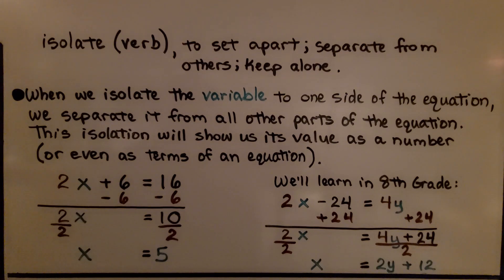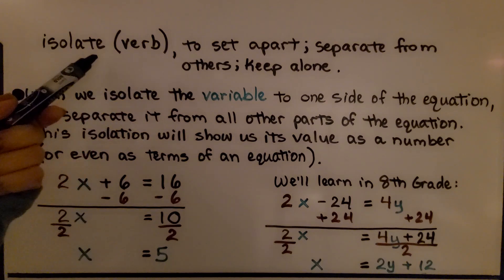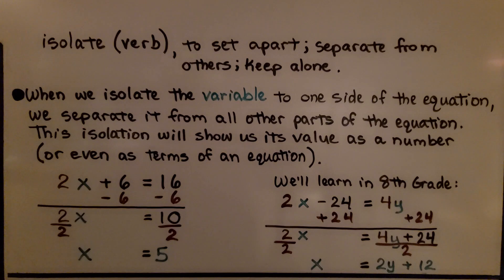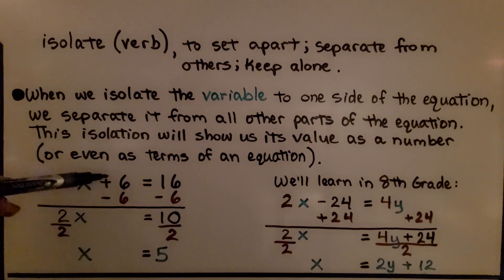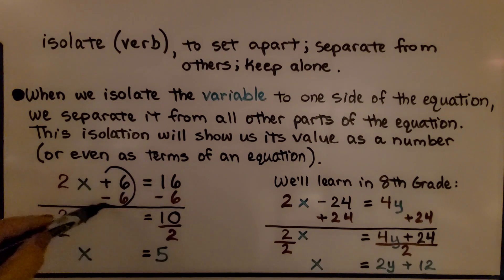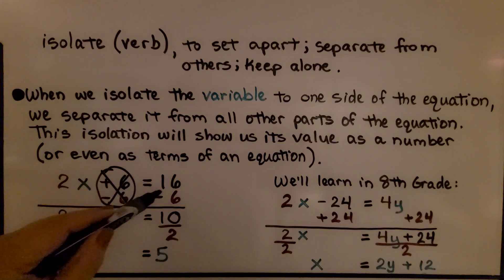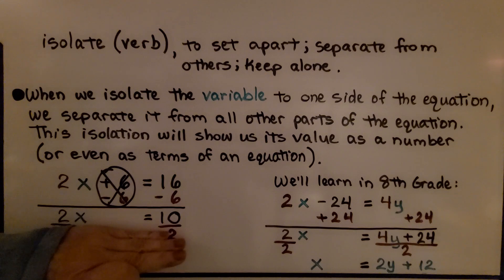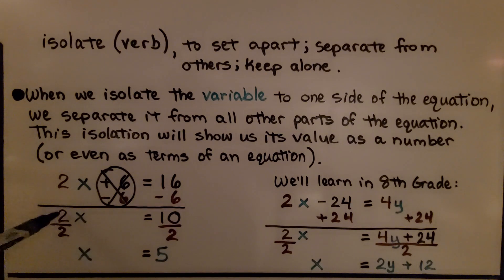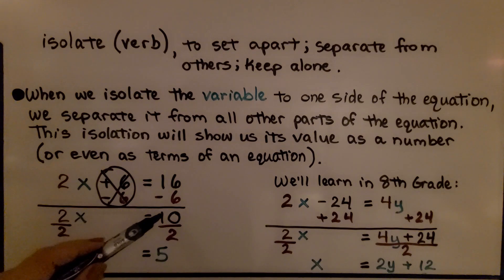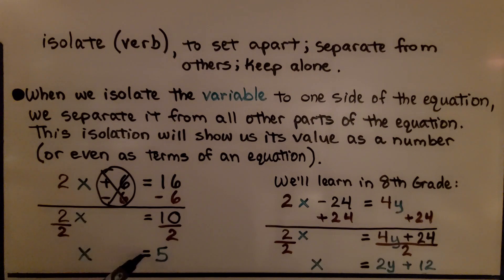We've been using the word isolate — it's a verb meaning to set apart, separate from others, keep it alone. When we isolate the variable to one side of the equation, we separate it from all other parts. For example, with 2x plus 6 is equal to 16, we use the inverse operation and subtract 6 from both sides, creating a zero pair and eliminating it. That gives us 2x equals 10. We then divide both sides by the coefficient 2 — since 2 over 2 is 1, we get x is equal to 5.